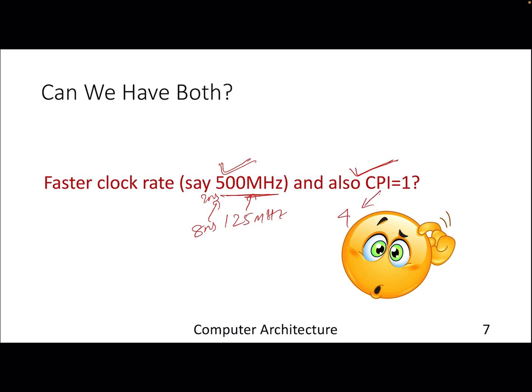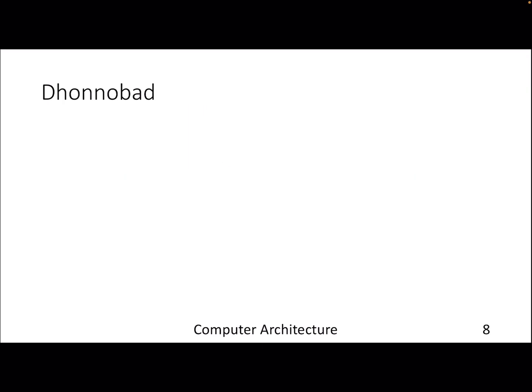So can we get the best of both worlds: 500 megahertz processor or clock cycle time of two nanoseconds along with CPI of one? That's where instruction pipelining will come into picture, which we will discuss in the next video. With that, thank you.